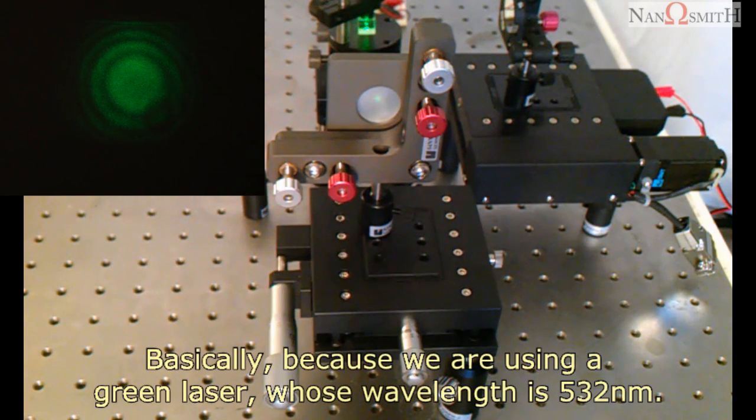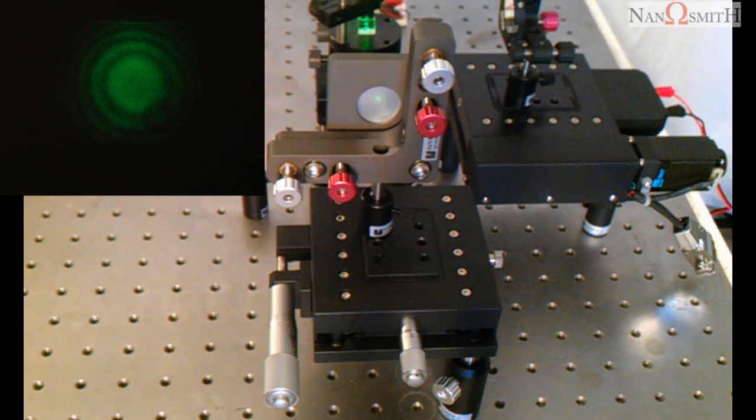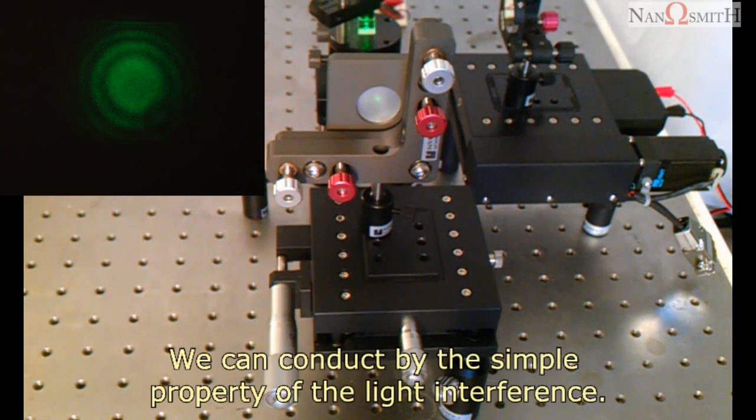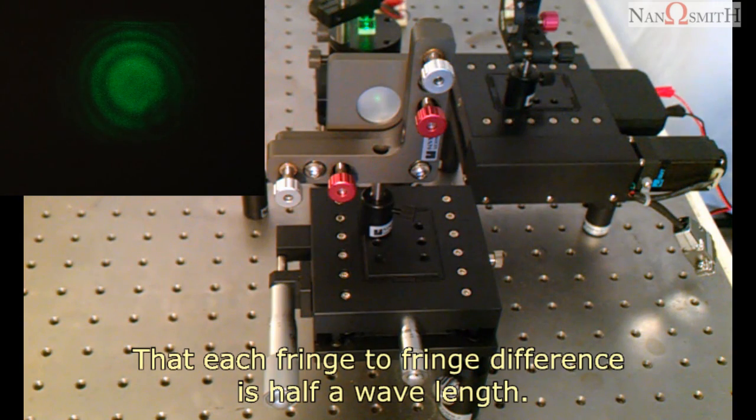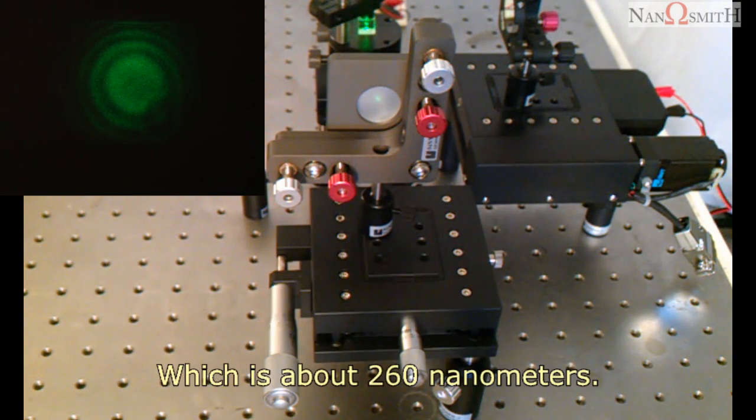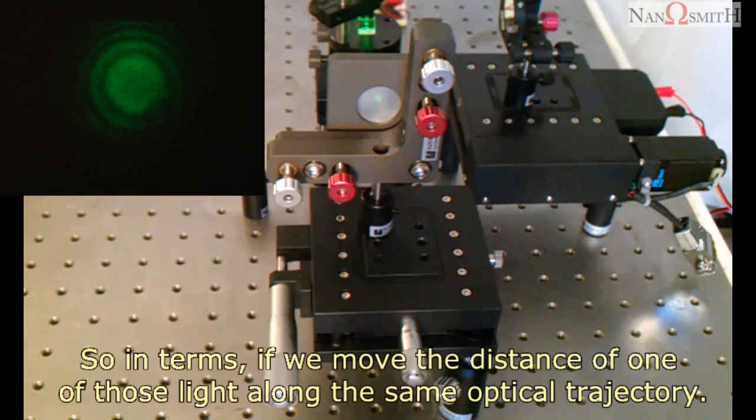Basically, because we are using a green laser, whose wavelength is 532 nanometers, we can conduct by the simple property of the light interference that each fringe to fringe difference is a half a wavelength, which is about 260 nanometers.